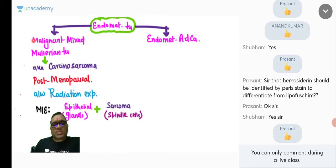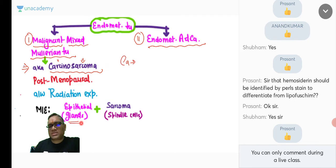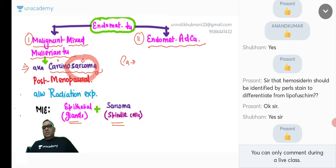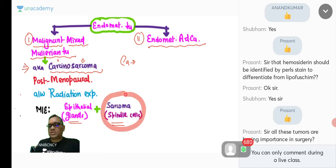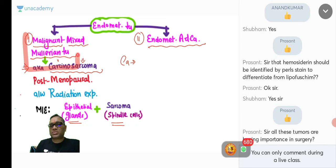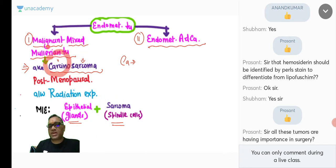Two important endometrial tumors: malignant mixed Müllerian tumor (MMMT) and endometrial adenocarcinoma. MMMT is also called carcinosarcoma — it has both epithelial glandular (carcinoma) and spindle cell (sarcoma) components. On uterine biopsy showing both tumor-forming glands and spindle cells, the diagnosis is MMMT/carcinosarcoma. It occurs in postmenopausal patients, sometimes with a history of radiation exposure.